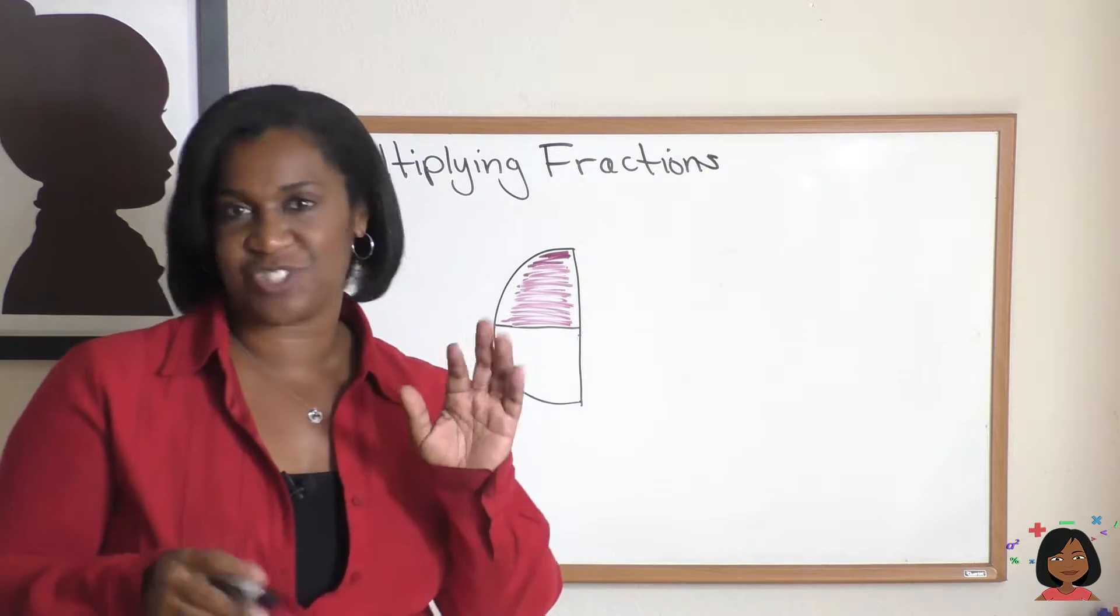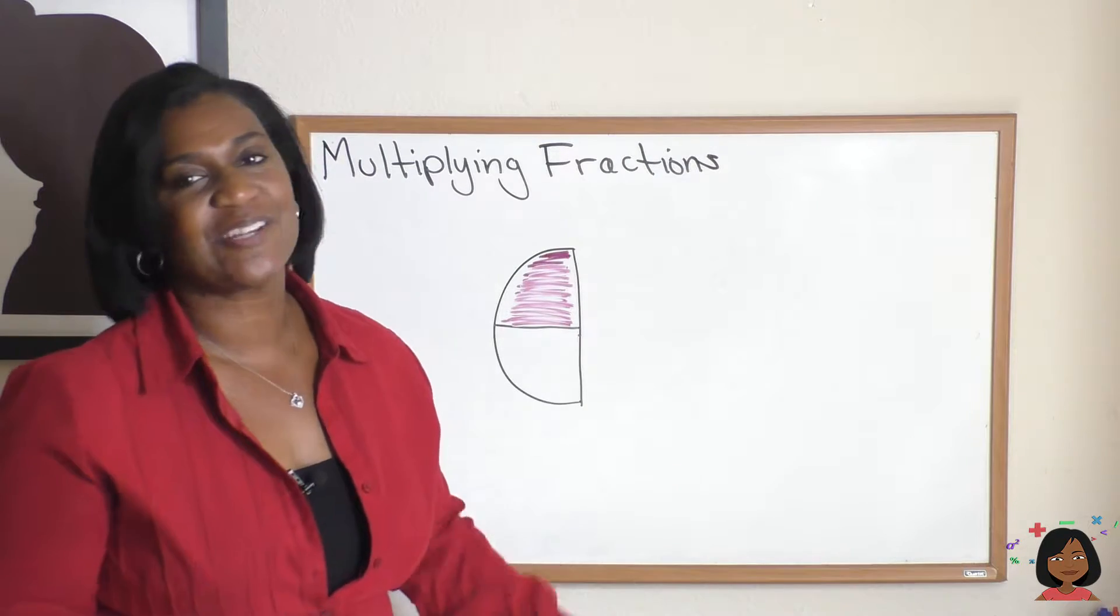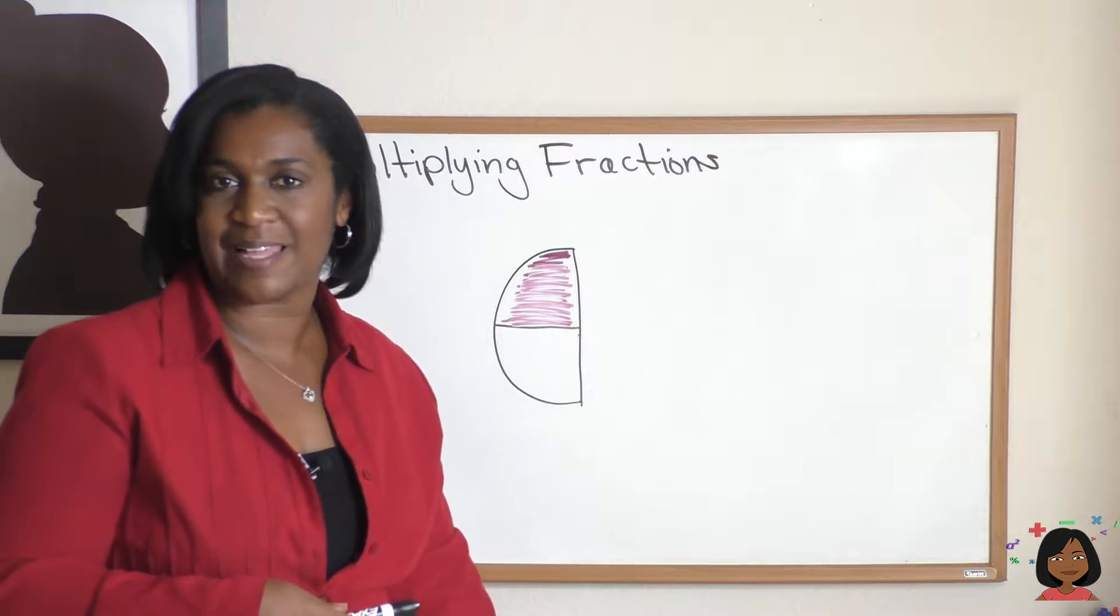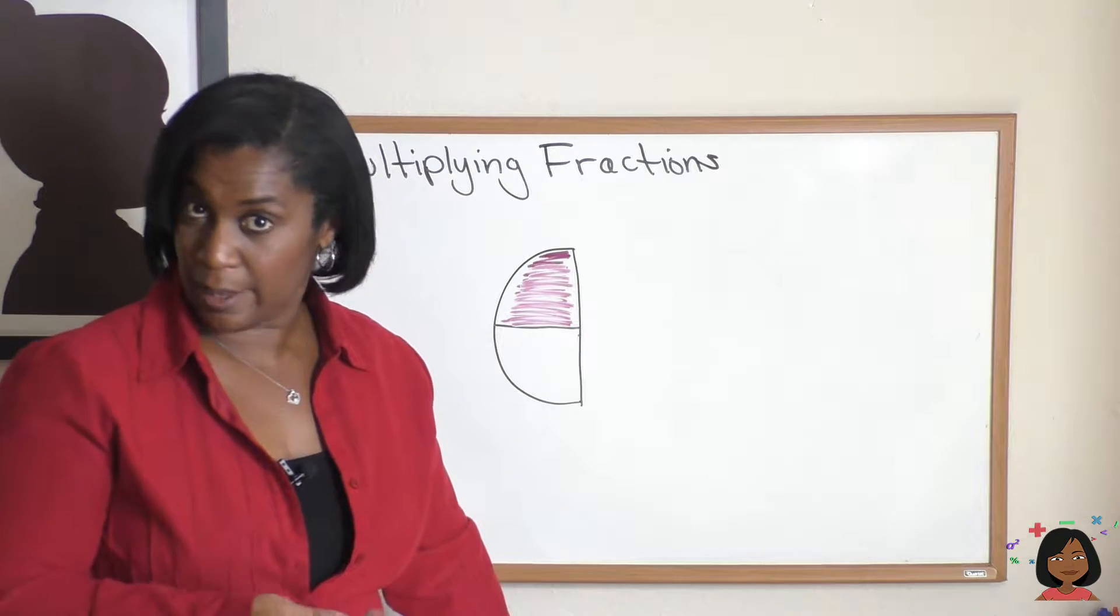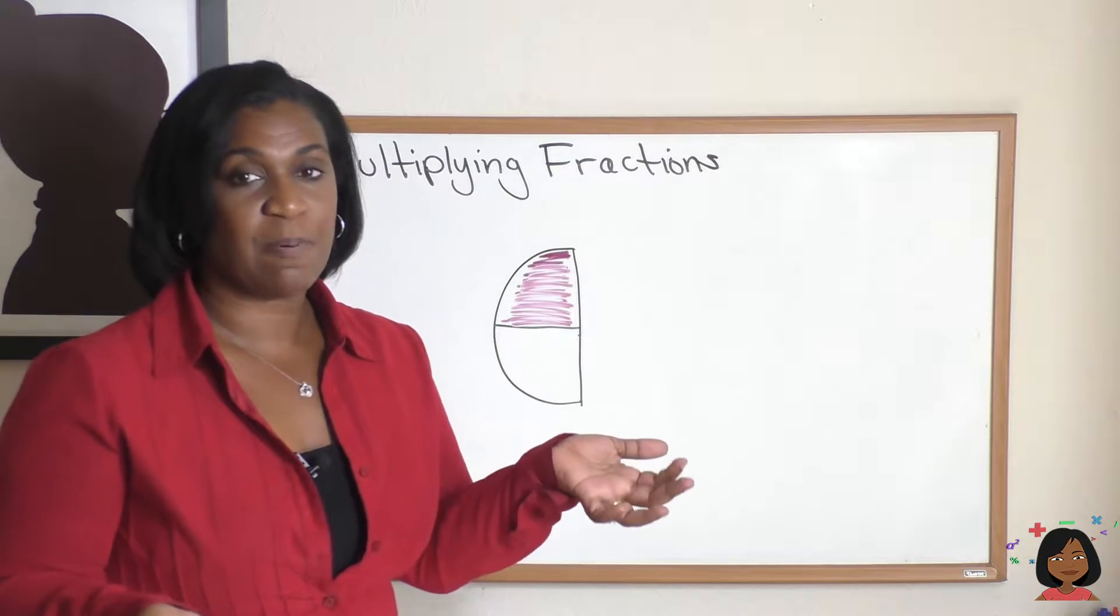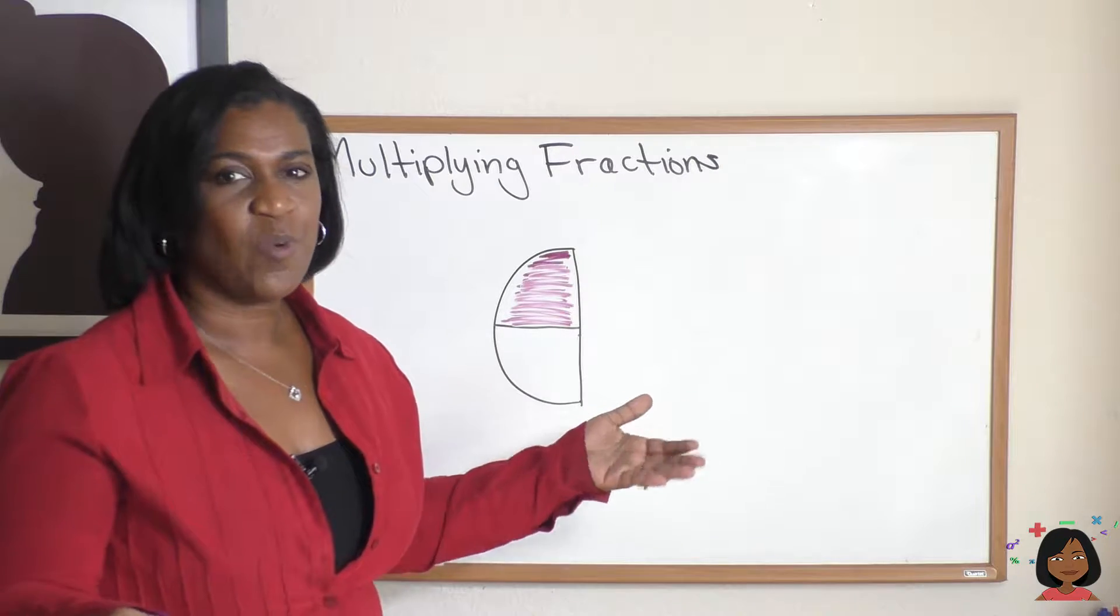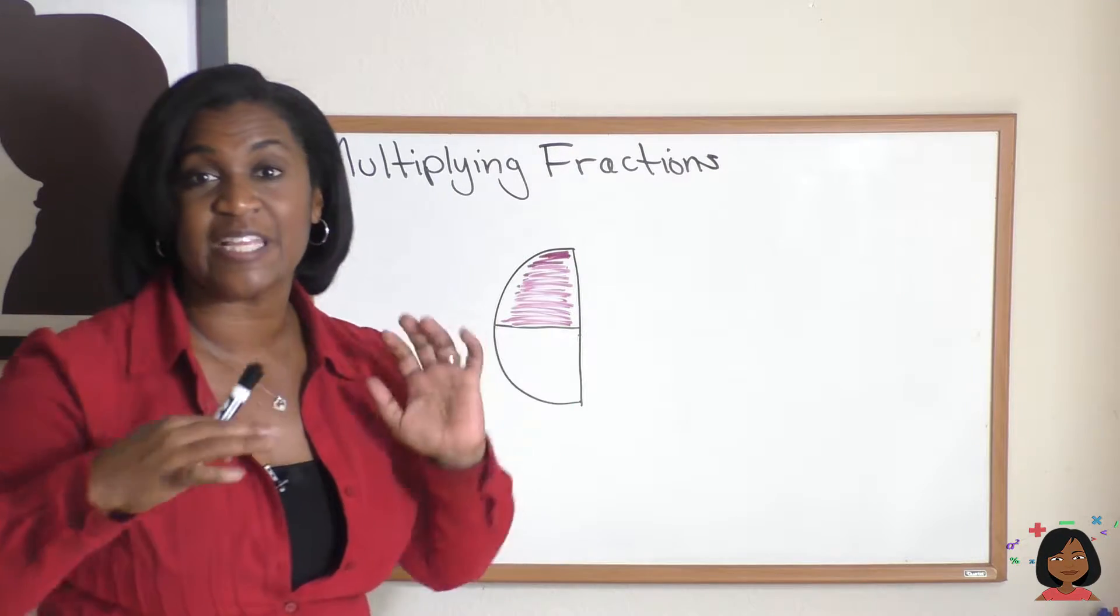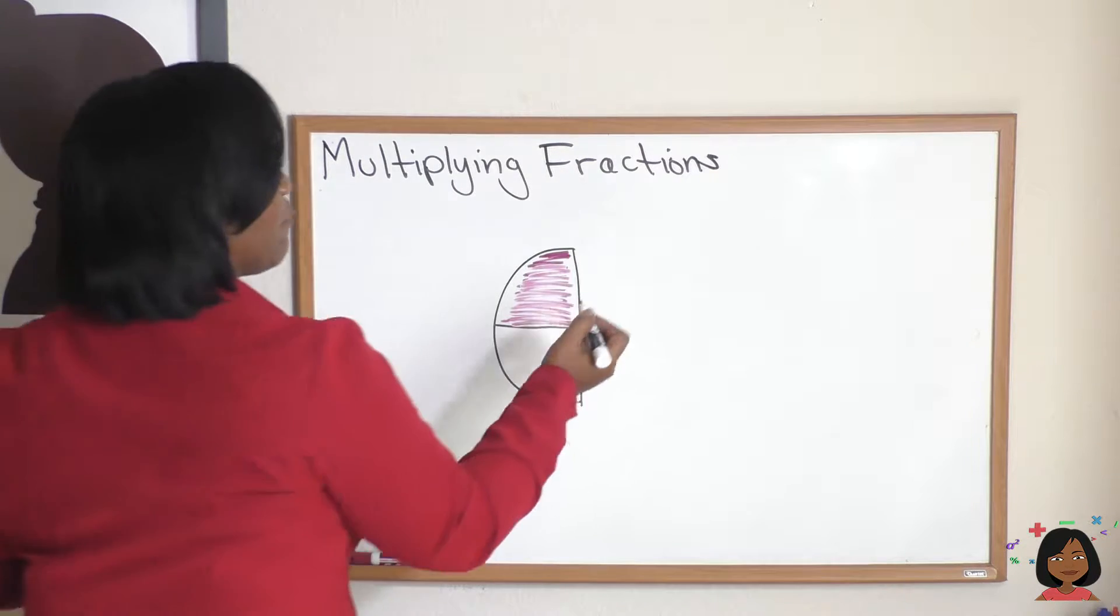So here I have a half of a circle. Imagine it's like half of a pizza pie that you had last night for dinner, still left over in the fridge. Pizza pies don't last that long in my house, but I'm just saying. So we have half of a pizza pie, and for lunch today you decided you wanted to eat half of it. Well, isn't that really the same thing as saying you're gonna eat a quarter of it?